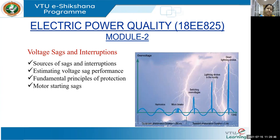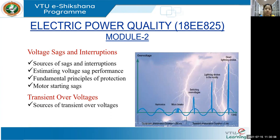Then we'll cover motor starting sags — how motors contribute to voltage sag. Then we will go for transient overvoltages. We have observed these kinds of transients — the sudden flickering in tube lights — for a very short period. We are going to learn about sources of transient overvoltages.